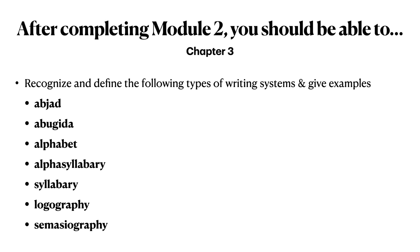After completing Module 2, you should be able to recognize, define, and give examples of the following types of writing systems: Abjad, Abugida, Alphabet, Alphasyllabary, Syllabary, Logography, and Semasiography.